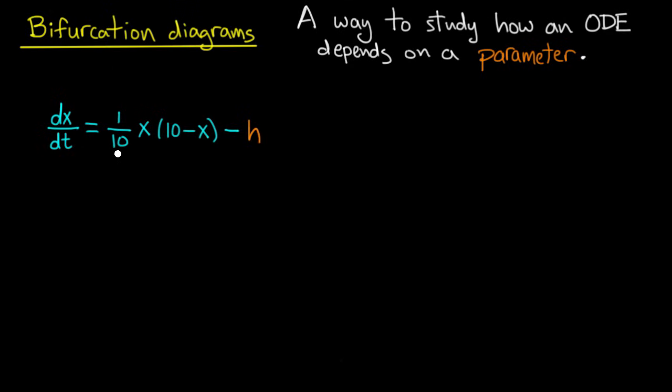Now the way to study such a thing and how it depends on the parameter h is essentially to draw a lot of phase lines, and we draw them for various values of the parameter h.